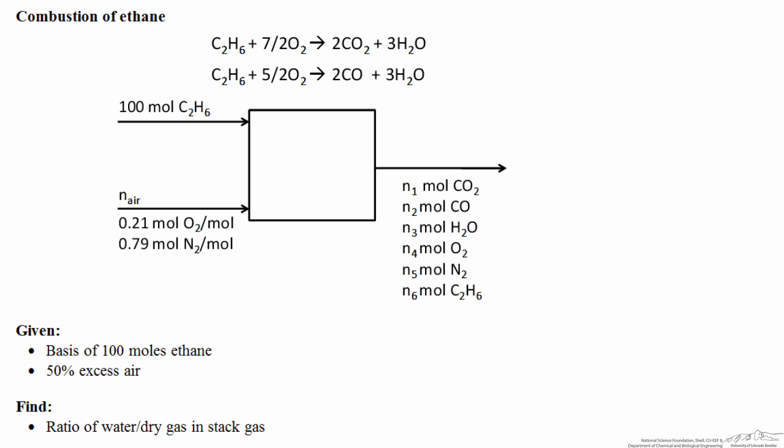The reaction stoichiometry for ethane is shown. The first reaction is the complete combustion of ethane where carbon is converted to carbon dioxide. The second reaction shows the partial combustion of ethane where carbon is converted to carbon monoxide.